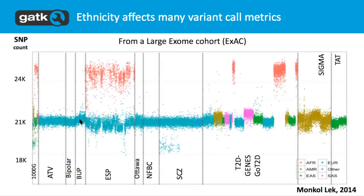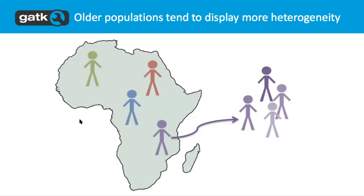From the Exome Aggregation Consortium, we see some interesting information about SNP counts. The x-axis is individuals grouped by projects — you see 1000 Genomes, Type 2 Diabetes, and others — giving you an idea of common variation across all these projects. You'll notice much higher variation compared to the human reference genome in the African population. One explanation for that is the founder's effect: if a population is from a small number of colonizing ancestors, you have reduced genetic diversity amongst that colony.